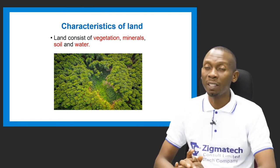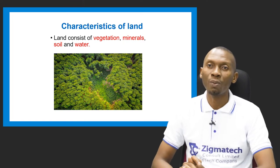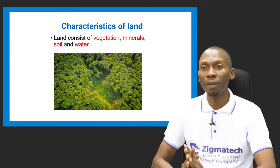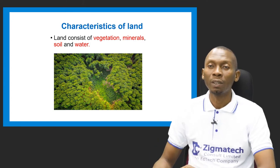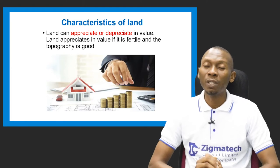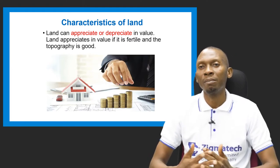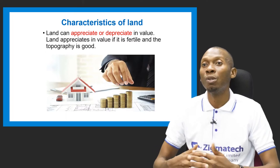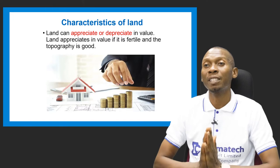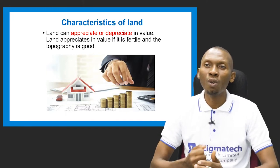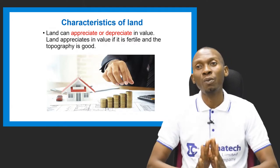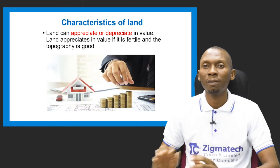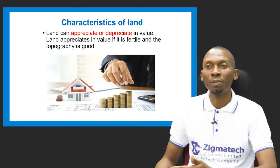Land also consists of vegetation, minerals, soil, and water. Furthermore, land can appreciate or depreciate in value. It appreciates especially when it is fertile and the topography is good, making its value high. But if it is infertile or the topography is poor, the value of such land will depreciate.